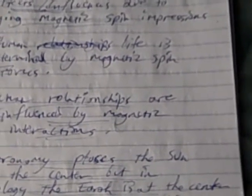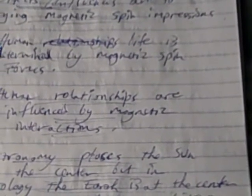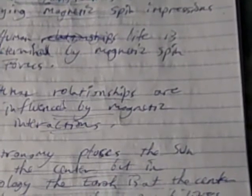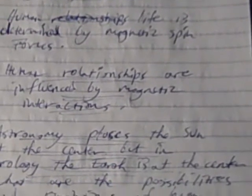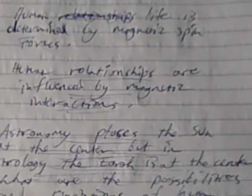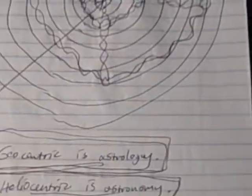Astronomy places the sun at the center, but in astrology the earth is at the center. And the reason it's at the center, as I said, is because it's the epicenter from our standpoint as human beings of all the magnetic forces that affect us individually and collectively. So the question is, what are the possibilities and limitations of human beings if everything is fundamentally based on magnetic spins or magnetic currents?